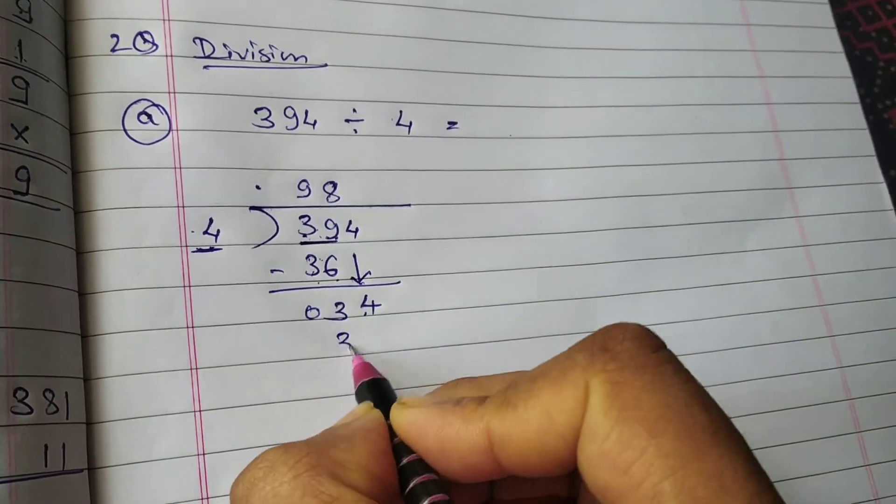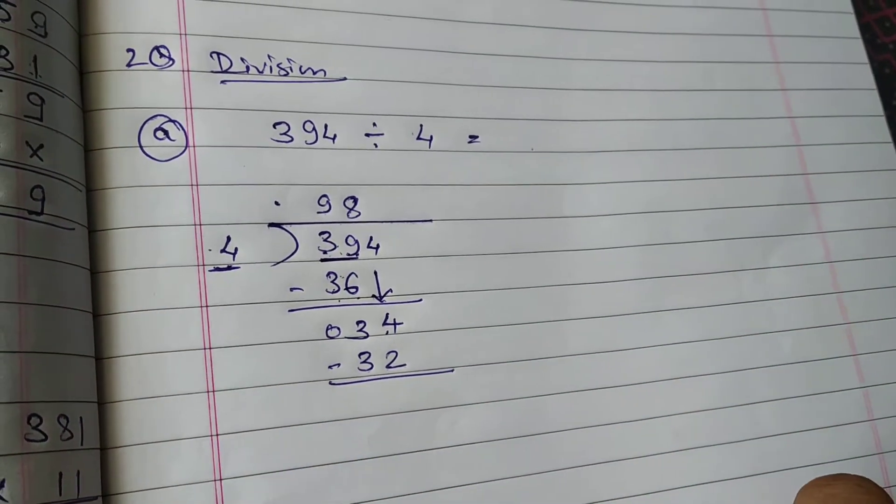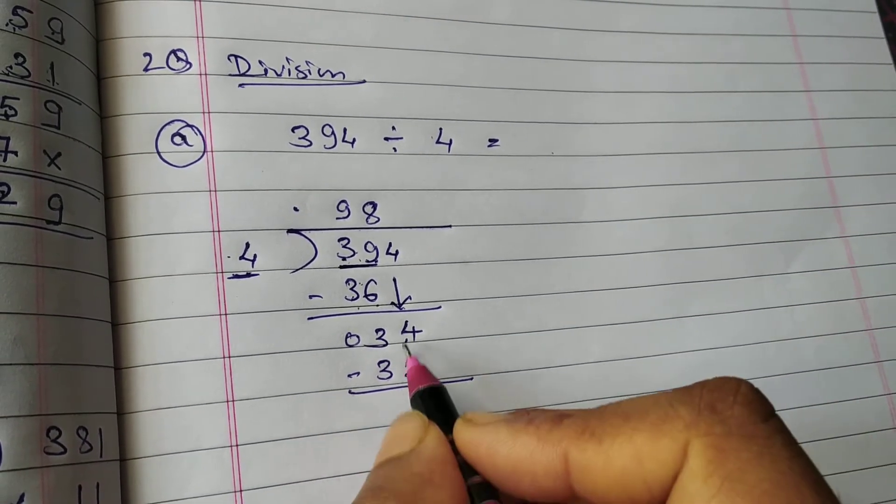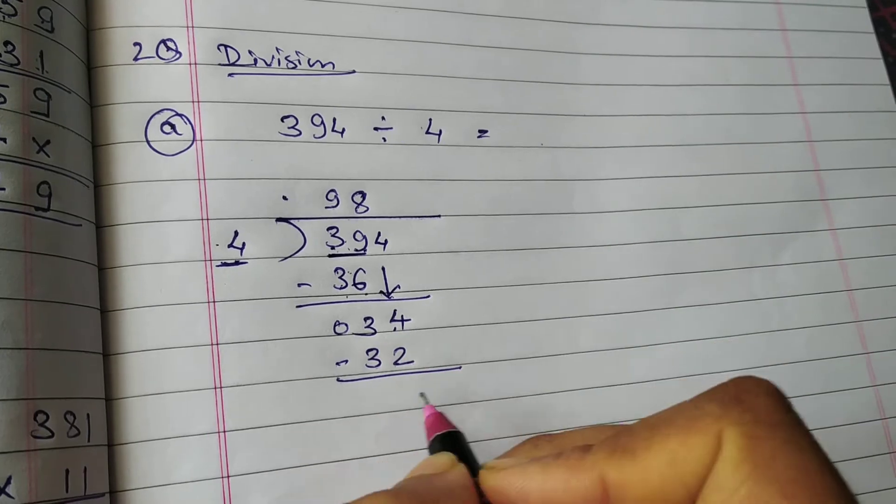4 eights are 32. Okay, 32 is near na aur is se sabse chota number hai ki haan, easily subtract bhi kar sakte hai. So now it is 2.